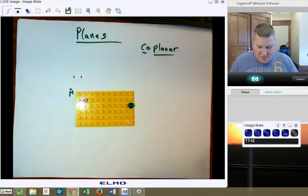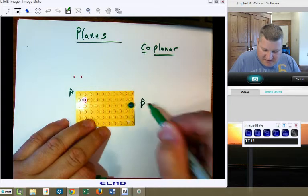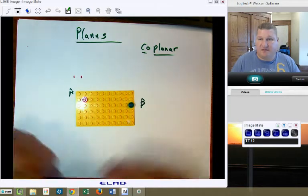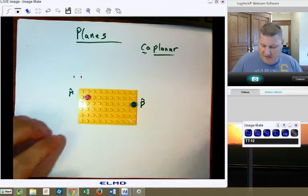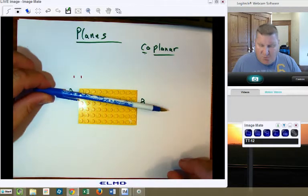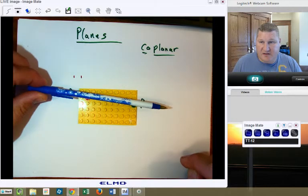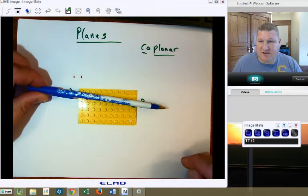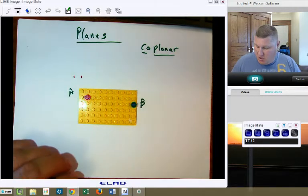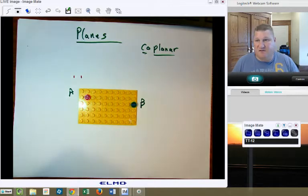I can take point B and I can put point B on this plane. Now, one of the first theorems that we're going to have is the fact that through any two points, any two points, there is exactly one line. I can always connect the dots with those two points and they are always going to be on the same line and they are always going to be co-linear because they're always on the same line.